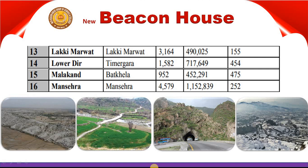The fourteenth district is Lower Dir. Its headquarter is Timergara and its area is about 1,582 km². Its population is 717,649 and its density is 454 people per km². The fifteenth district is Malakand. Its headquarter is also in Malakand. It has an area of 1,632 km², a population of 1,152,839 people, and a density of 252 people per km².